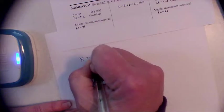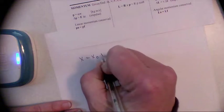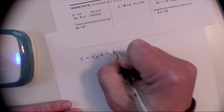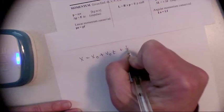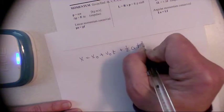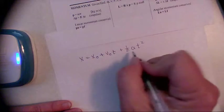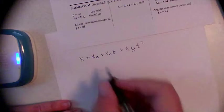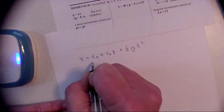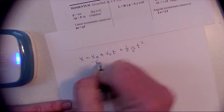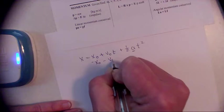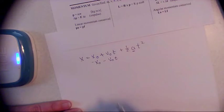x equals x naught plus v naught t plus one-half at squared. Cool, let's solve for a. So to start there I'm going to use, I always like to do my addition and subtraction first.